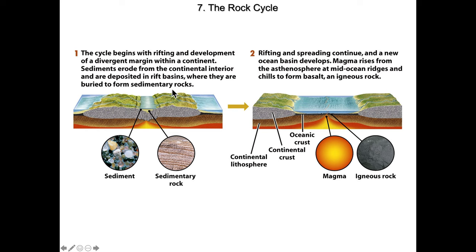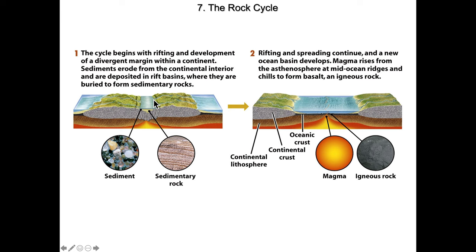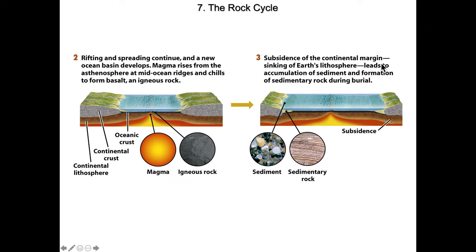In the case of the rift lakes of Africa — Tanganyika, Malawi — very deep lakes. Lots of sediment has accumulated over tens of millions of years, and that sediment has reached a point where it's being compressed by the overlying material and the grains are being fused together. If rifting and spreading continue, we see the development of a new ocean basin — that's what Africa is trying to do in the Great Rift. Magma will rise from the asthenosphere at the mid-ocean ridges and chill to form basalt, a common low-pressure igneous rock. If the subsidence of the continental margin continues, it's going to lead to accumulation of sediment and formation of sedimentary rock during burial.